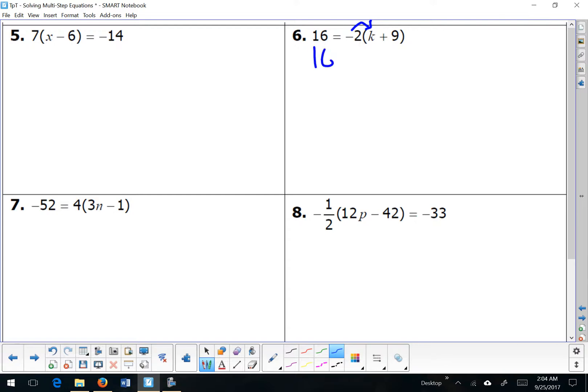The 16 stays the same, but the coefficient gets multiplied by everything inside the parentheses. So negative 2 times k, and negative 2 times 9, negative 18. Now that the parentheses are gone, I check to see if I can combine like terms. And these are not alike, so I move on to step 3, which are my inverse operations. Add 18, add 18, negative 2k here and 34 here. Divide by negative 2, and I get my final answer.